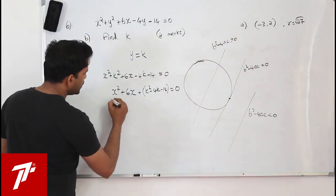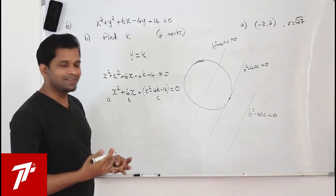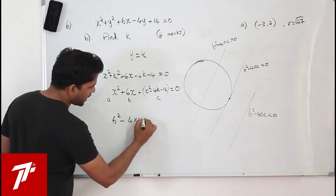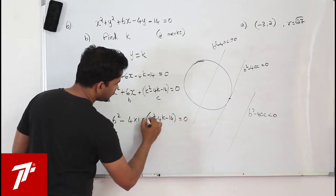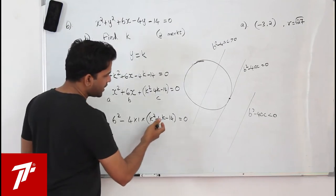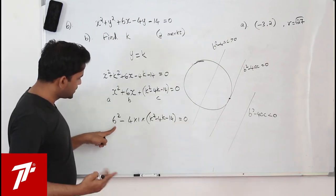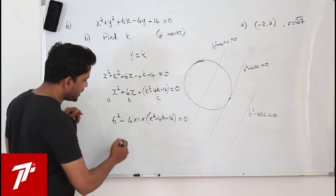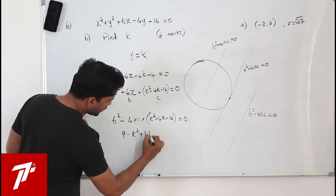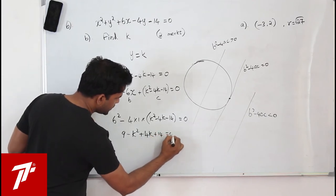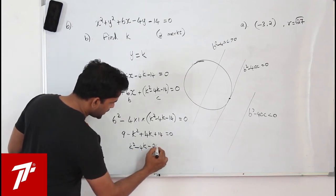You get x squared plus 6x plus (k squared minus 4k minus 14) = 0. Here a = 1, b = 6, c = k squared minus 4k minus 14. Set b squared minus 4ac = 0: 36 minus 4(k squared minus 4k minus 14) = 0. Dividing by 4 and simplifying gives k squared minus 4k minus 23 = 0.